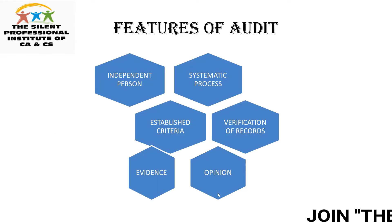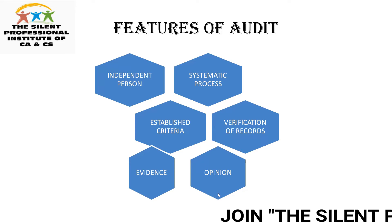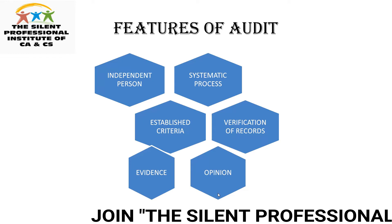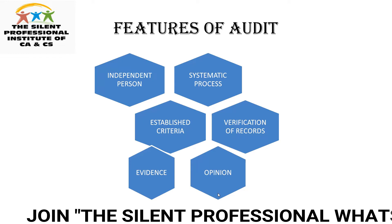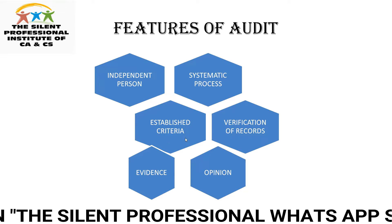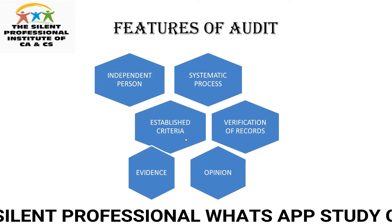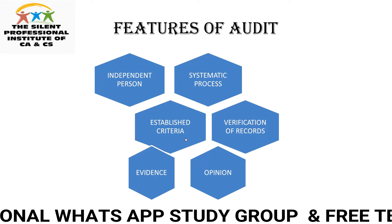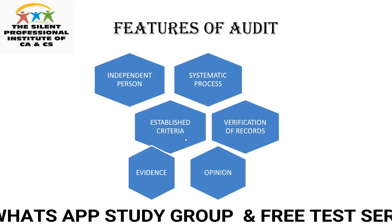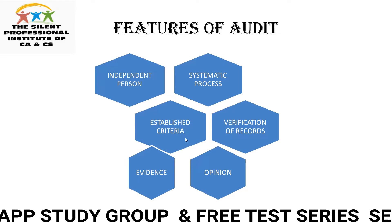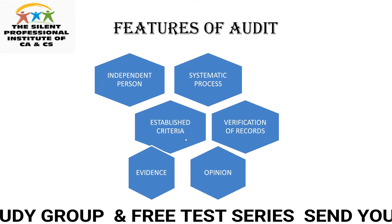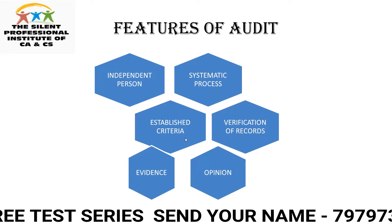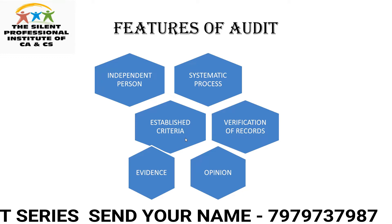The first feature of audit is that it is carried out by an independent person — free from any kind of bias and prejudices. The second feature is that it is a systematic process, meaning there should be proper planning, scheduling, and execution. Audit is not a haphazard or random process. First we plan our audit, get to know the organization, schedule it, inspect the documents, and then frame our opinion.